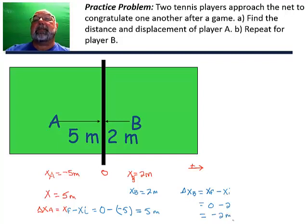It says that player B ended up negative two meters from where they started.